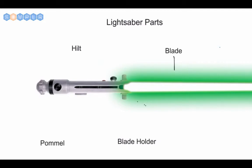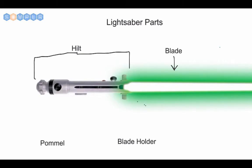The first section here is our blade — that's a no-brainer, right? This green glowing piece there. Next we have what some people refer to as the handle, but in lightsaber terminology it's called the hilt. Here's the hilt right here.